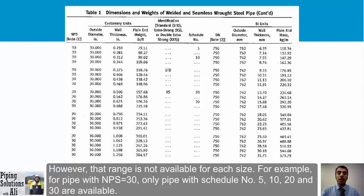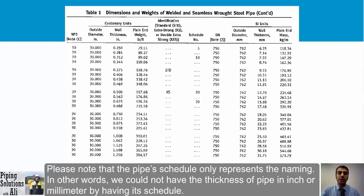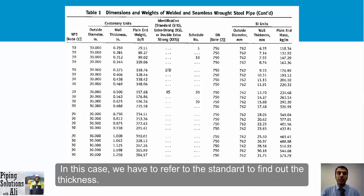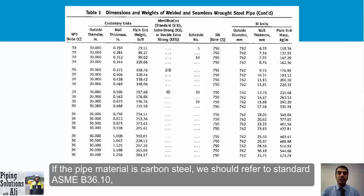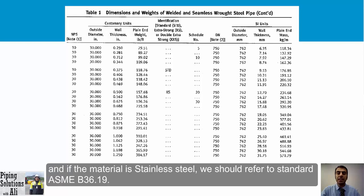However, the full range of schedule numbers is not available for every pipe size. For example, for NPS 30 only schedules 5, 10, 20, and 30 are available. Note that the schedule number is only a name — it does not directly tell us the thickness in inches or millimeters. We must refer to the standard to find the actual thickness.